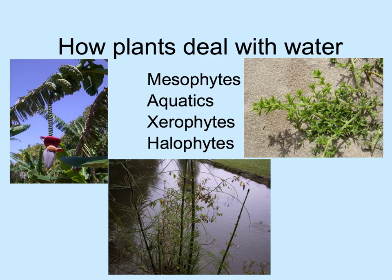Plants have many different strategies to deal with water and have become adapted in a variety of ways that we give names to. Mesophytes are plants of mesic — that is, moist — conditions. Some plants grow in water: aquatics, including emergent aquatics, submerged aquatics that live most of their life totally underwater, and floating aquatics that float on the water surface. Xerophytes are adapted to xeric or very dry conditions, including desert plants and epiphytes that sit on other plants.